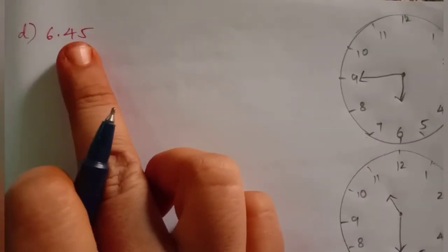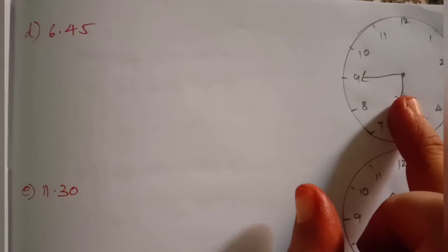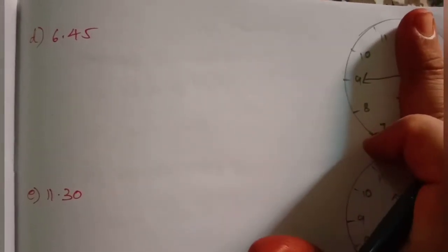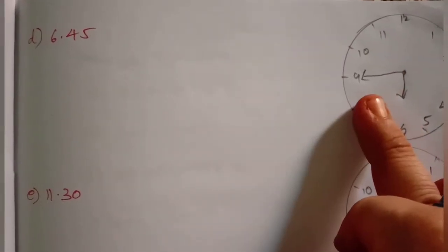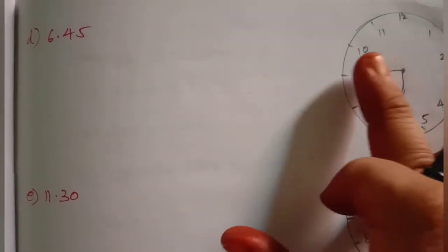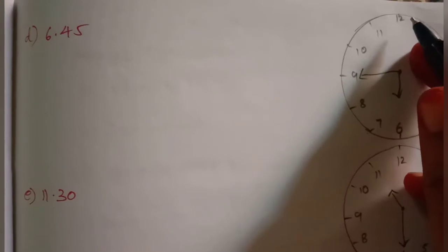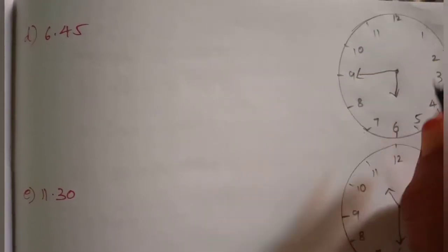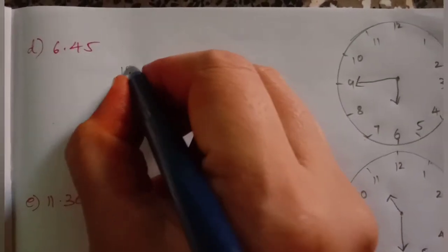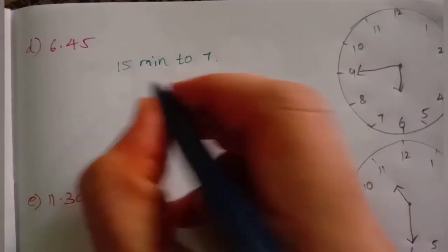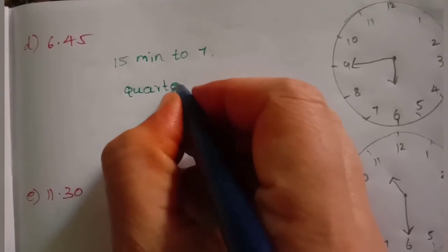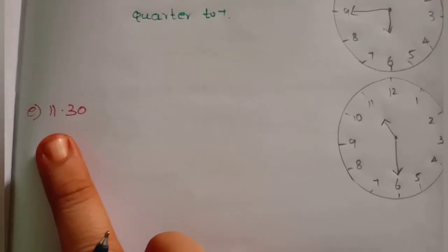Next one: 6:45. The minute hand is on the 6 and 12 left side. Count from 5 to 7: 5, 10, 15 — that is 15 minutes. So we say: 7 o'clock, 15 minutes to 7. In quarter form: quarter to 7. Q-U-A-R-T-E-R, quarter to 7.